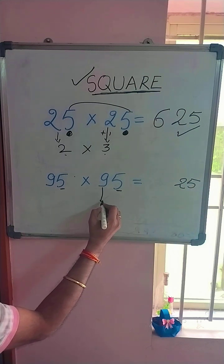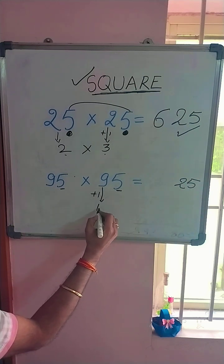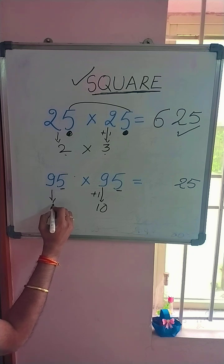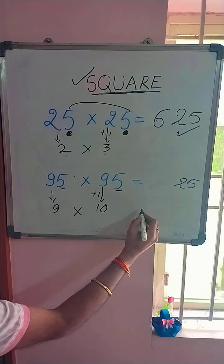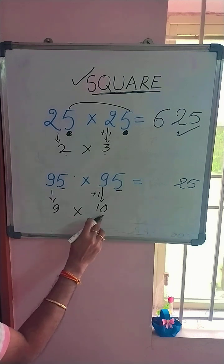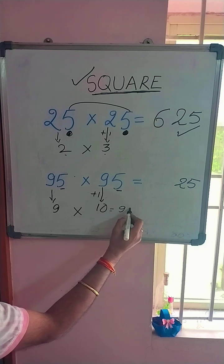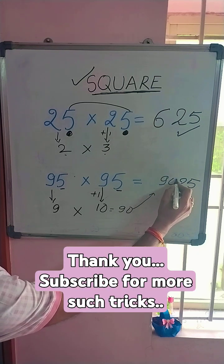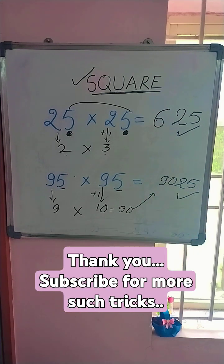Now for 95 squared — again, 5 times 5 equals 25. This 9 plus 1 is equal to 10, and this 9, so 9 into 10 is equal to 90. Put 90 here and your answer is ready: 9025.